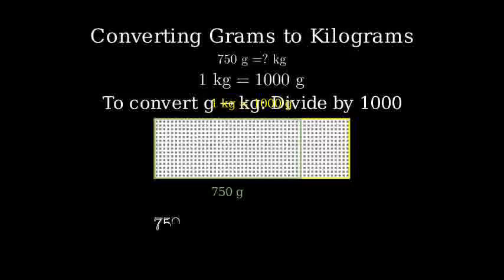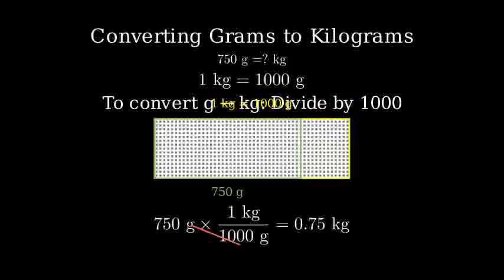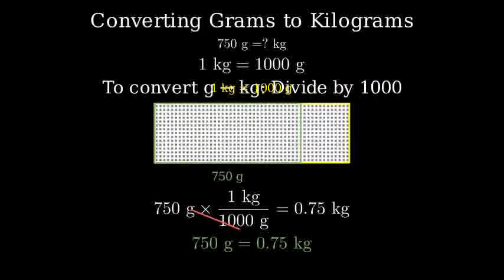Let's solve this step by step. To convert 750 grams to kilograms, we'll multiply by the conversion factor of 1 kilogram over 1000 grams. The grams units cancel out, leaving us with 0.75 kilograms.